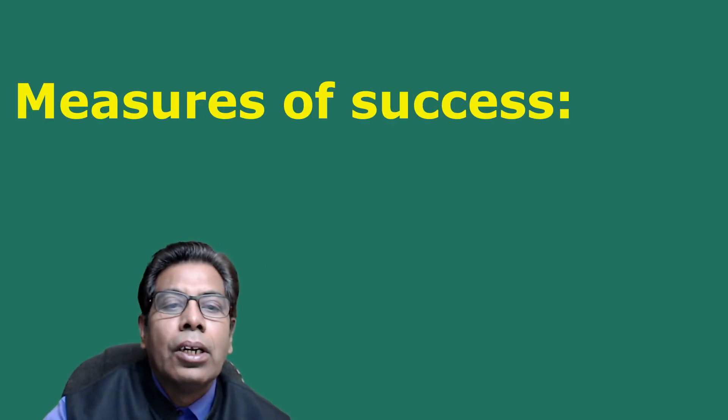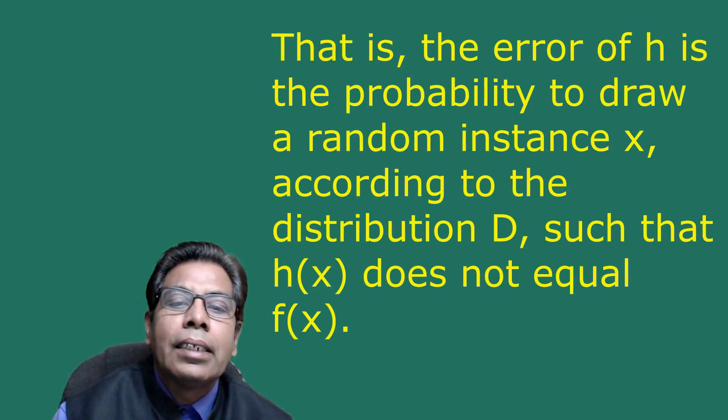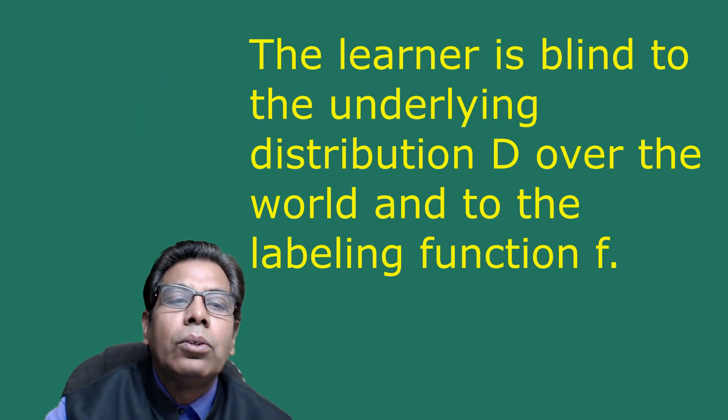We define the error of a classifier as the probability that it does not predict the correct label on a random data point generated by the underlying distribution. That is, the error of h is the probability of drawing a random instance x according to distribution D such that h(x) ≠ f(x). Note that the learner is blind to both the underlying distribution D and the labeling function f; the only way the learner can interact with the environment is through observing the training data.